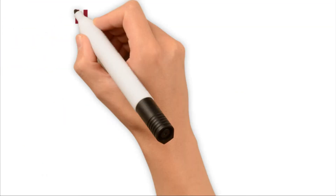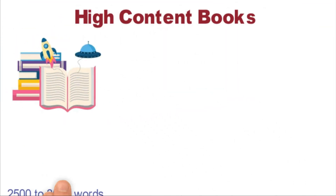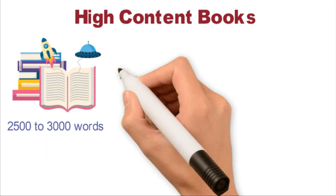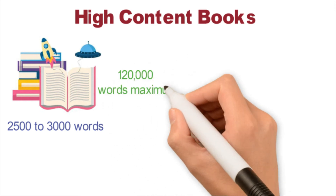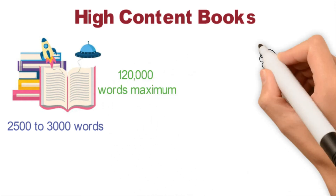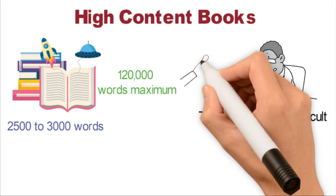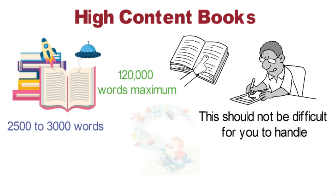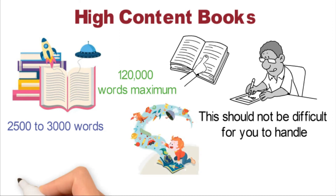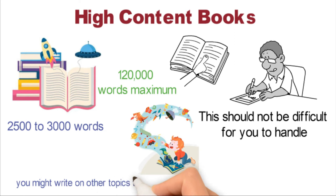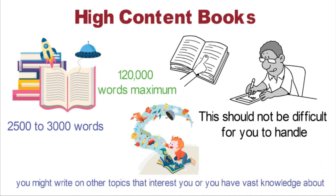High Content Books could be fiction or non-fiction. You should prepare to write a minimum word count of 2,500 to 3,000 words and keep it at 120,000 words maximum. If you are a passionate writer, this should not be difficult to handle. High content books are the regular books filled with written words — you can choose to write a story, either real or imaginary, or write on other topics that interest you or that you have vast knowledge about.